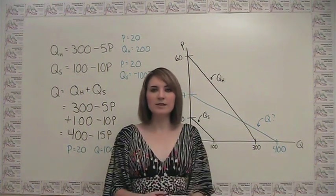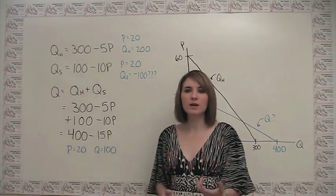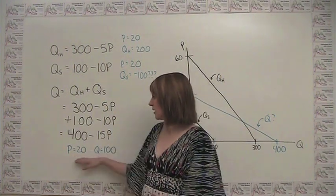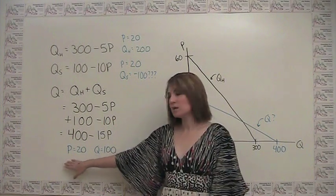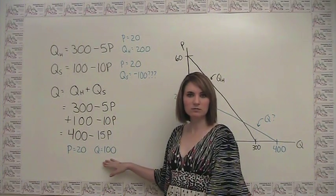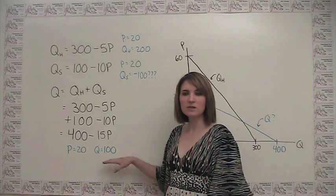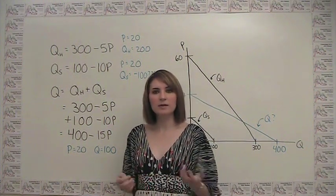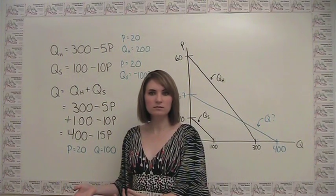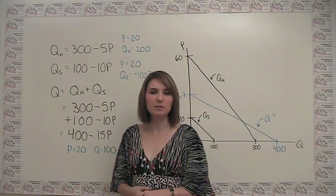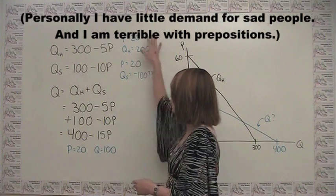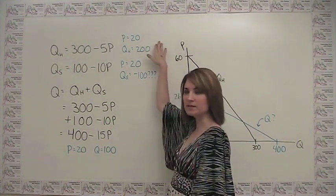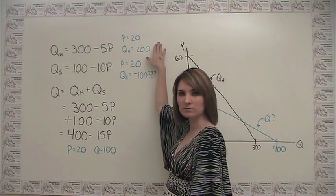But let's think about what this actually means. Let's hypothetically plug in a price of 20 and see what happens. If we plug 20 into this equation, we get that the market demand is 100. That seems fine. So this market demand is comprised of the demand by happy people and the demand by sad people. So for the happy people when price is 20, their quantity demanded is 200. Okay.